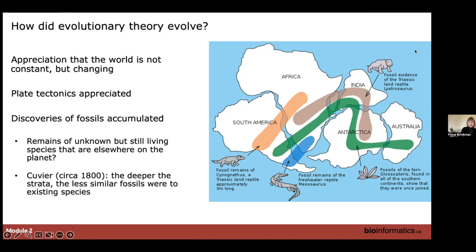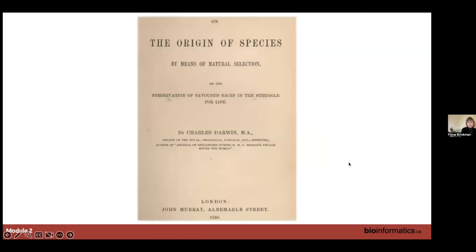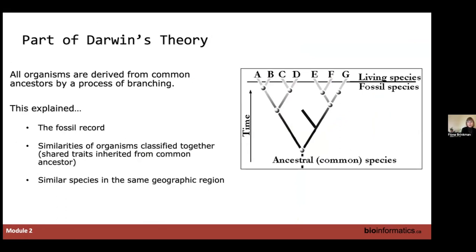We were starting to realize this was all making sense — that there was this sort of history. It was still debated whether there were remains of unknown but still-living plant species elsewhere on the planet. But Cuvier had this landmark study showing the deeper the strata, the less similar fossils were to existing species. Combined with other evidence, this really set the stage for Darwin's Origin of Species, which was notable because it gave a mechanism. There was already an appreciation for something, and this mechanism made people understand it.